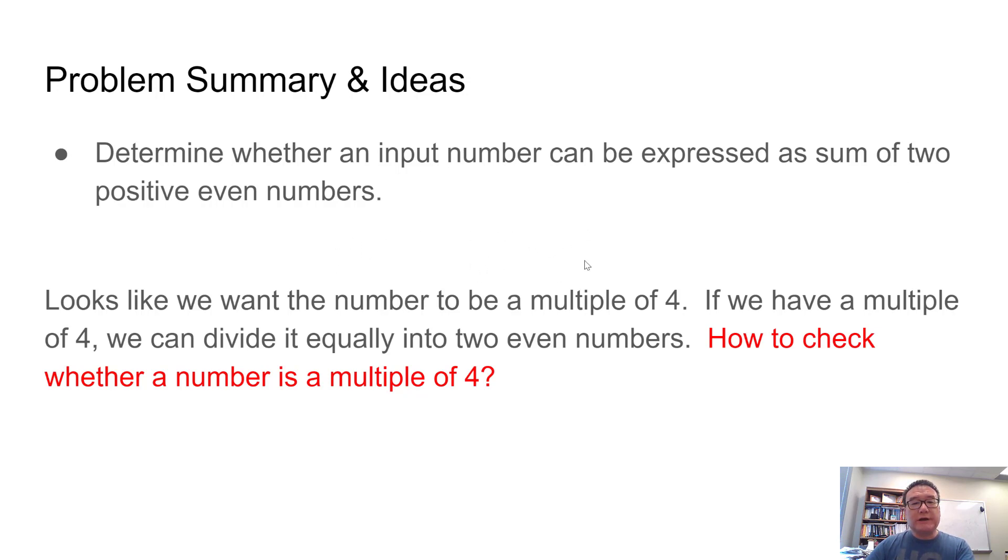I remember my first reaction when seeing the problem is it looks like we want the number to be a multiple of four, because if it is a multiple of four, then we can divide it into two equal parts, and both of them will be even. Without thinking further to determine whether that's absolutely correct for this problem, let's just try to implement that first. The question is how do we check whether a number is multiple of four?